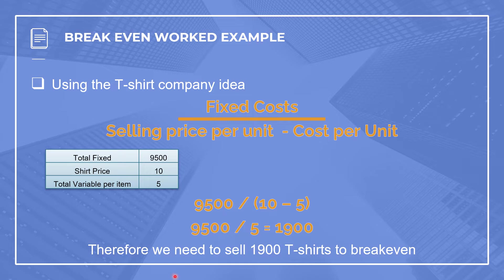First of all, we put £9,500 in as our fixed cost. Our selling price is £10, so we put £10 in. And our cost per unit is £5, so we put £5 in. We need to do the subtraction first before the division. So £10 minus £5 is £5, and then £9,500 divided by £5 equals 1,900.